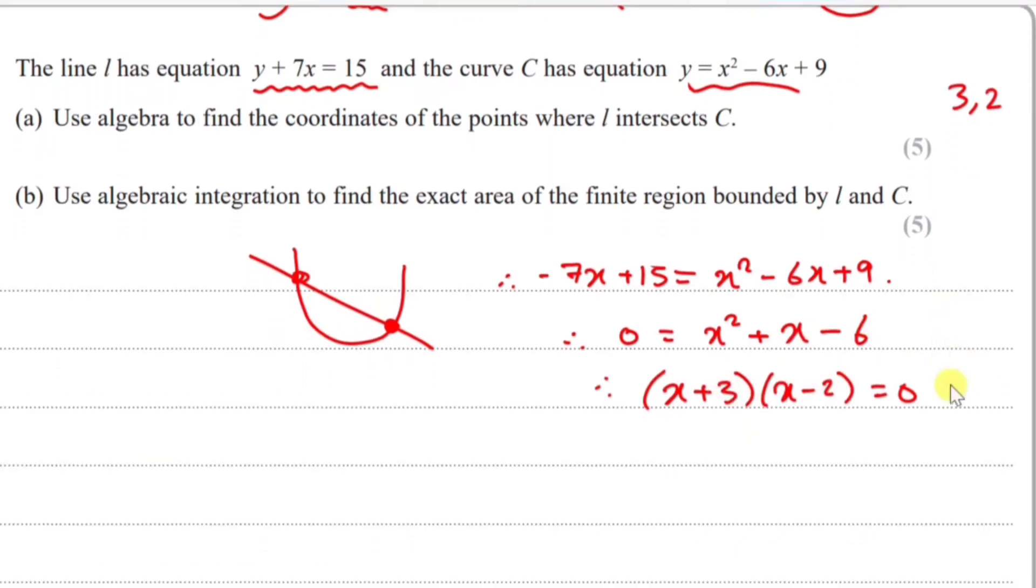Therefore, the solutions are always the inverse of these brackets. So if it's x + 3, the solution is x = -3. And the other one, x - 2, gives a solution of x = 2.